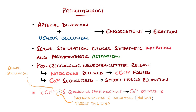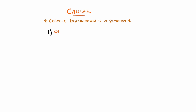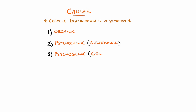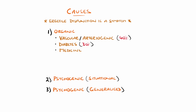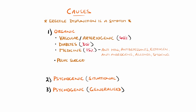ED is a symptom and not a disease itself, with disruption anywhere in the erectile response generating it. The causes can be divided into organic, psychogenic situational and psychogenic generalised. Organic causes include vascular or arteriogenic in around 40%, diabetes in 30%, and medicines such as antihypertensives, antidepressants, oestrogens or antiandrogens. Alcohol, marijuana and cigarette smoking also make up 15% of cases.